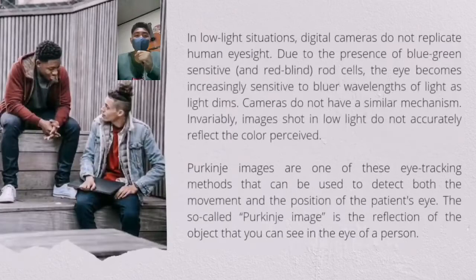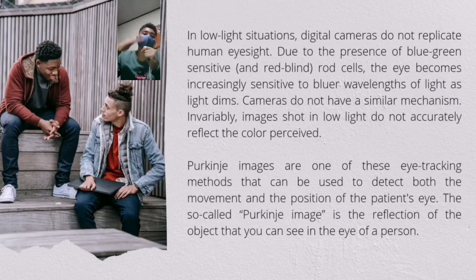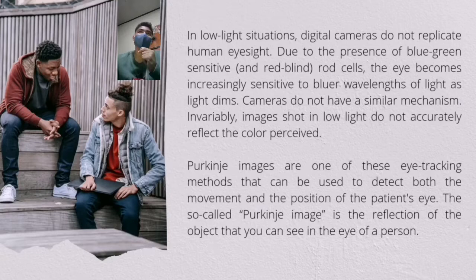How does the Purkinje effect occur? The Purkinje effect occurs at the transition between photopic vision, which makes use of our cones, and scotopic vision, which uses our rods — basically when moving from a high level of illumination to a low level of illumination. The effect occurs because in mesopic conditions, the outputs of cones in the retina, which are generally responsible for the perception of color in daylight, are pooled with the outputs of rods, which are more sensitive under those conditions and have peak sensitivity at blue-green wavelengths of 507 nanometers.